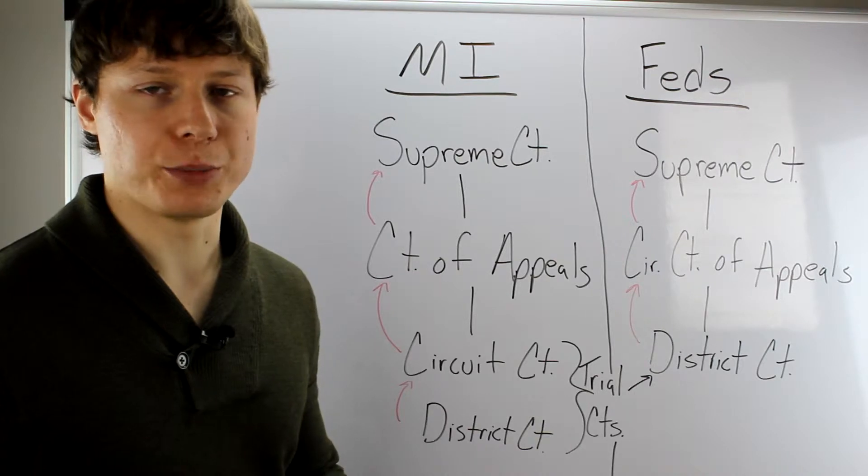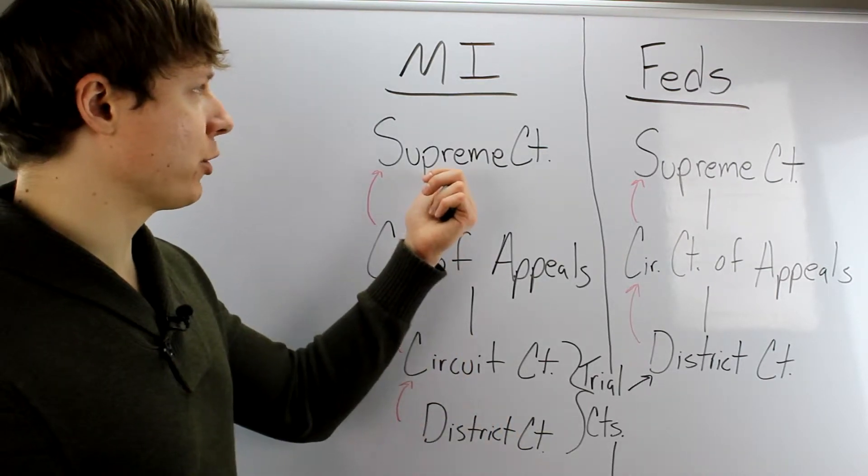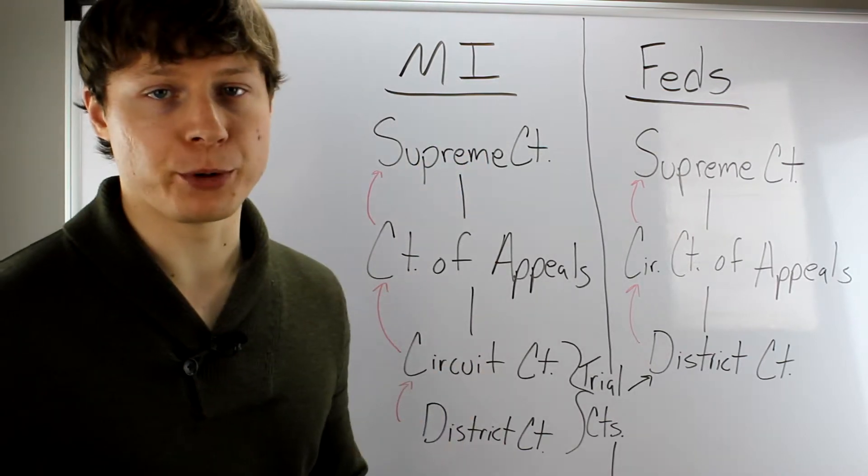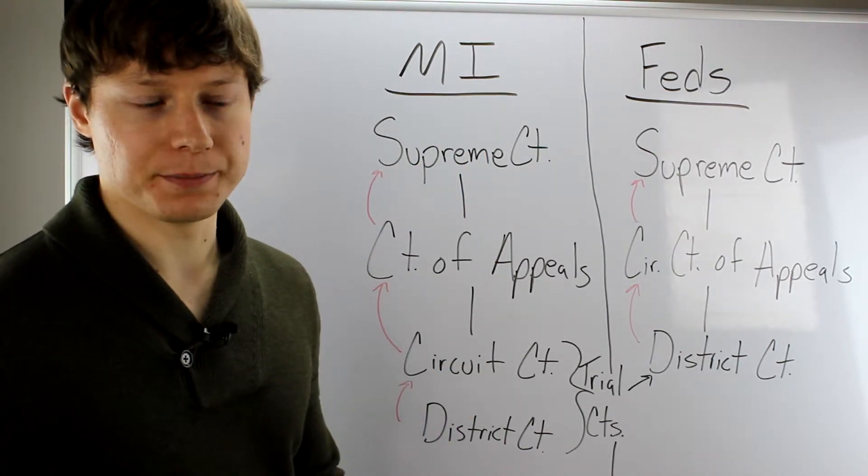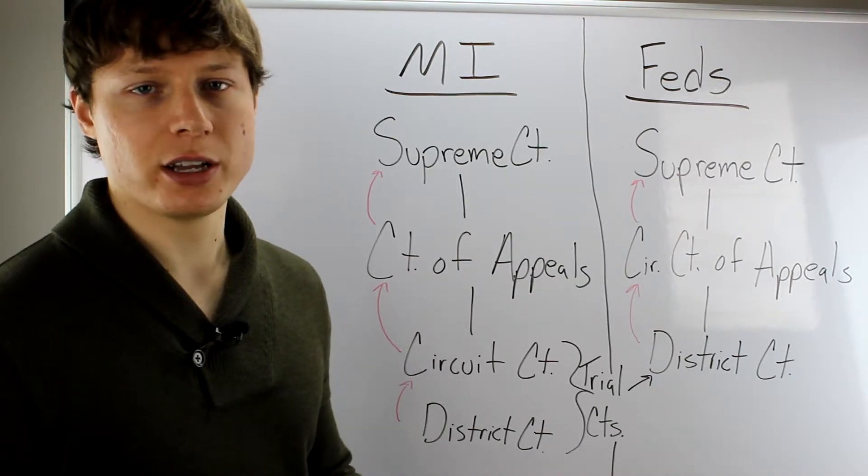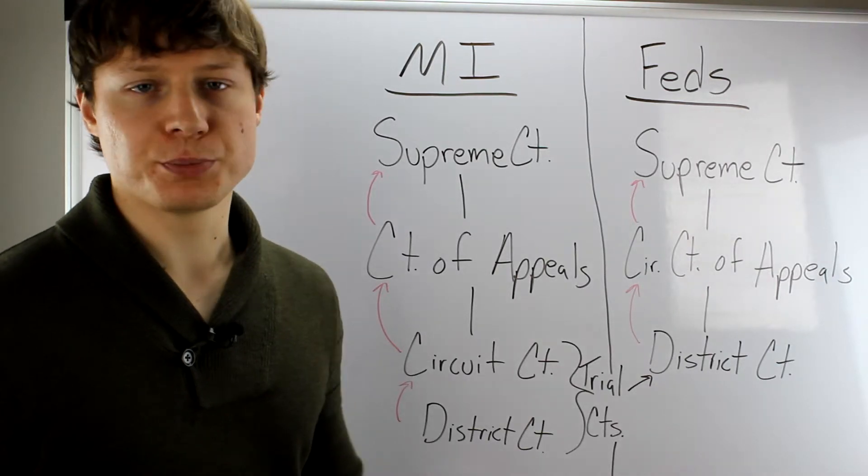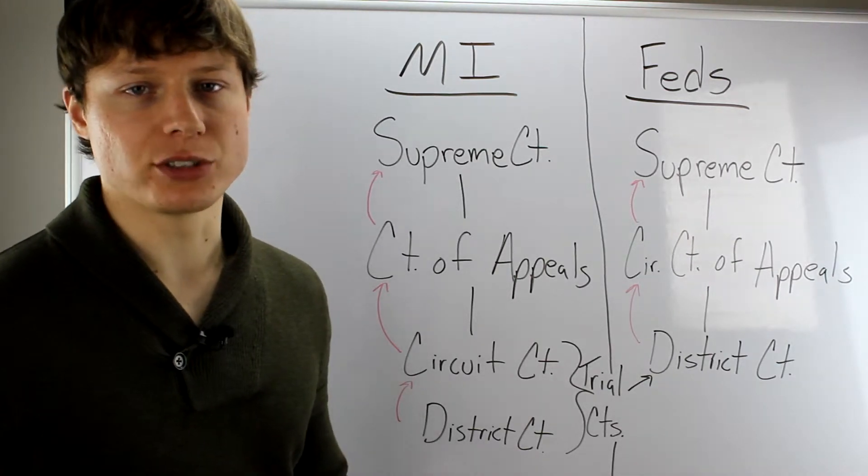So you have to ask for permission and you're going to ask the Supreme Court in Michigan for that permission. They can either grant your appeal or they can deny it. So they can give you permission to appeal to them or they can deny you permission to appeal to them. Let's just pretend like they did give you permission to appeal to them. The Michigan Supreme Court heard your case and they decided against you there and you wanted to appeal it again.